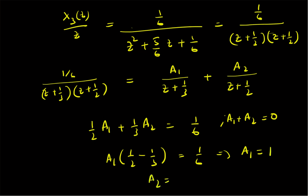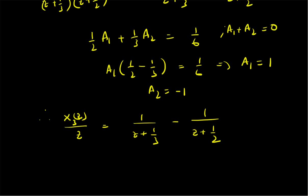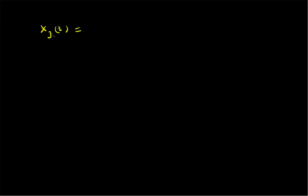Therefore A₂ = −1. So X₃(z)/z = 1/(z + 1/3) − 1/(z + 1/2). The next step is to go back into functions of z⁻¹, so we write X₃(z) as: X₃(z) = 1/(1 + (1/3)z⁻¹) minus 1/(1 + (1/2)z⁻¹). That is the final form of X₃(z).